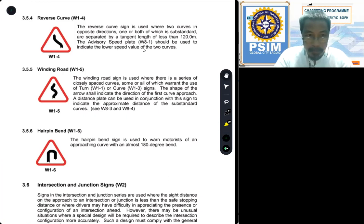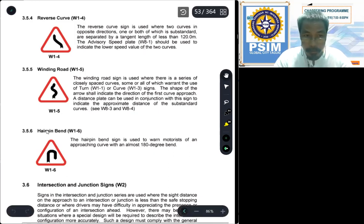And type W1-6, the last type under this warning signs: hairpin. Hairpin bend sign is used to warn motorists of an approaching curve within an almost 180 degree bend. That is what we call hairpin. As you can see the symbol here, that is 180 degrees.